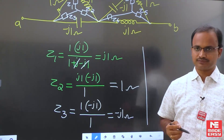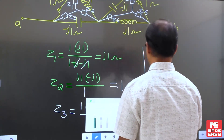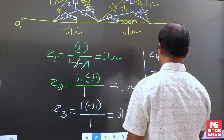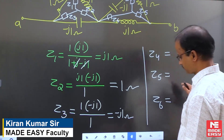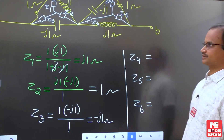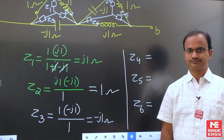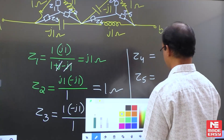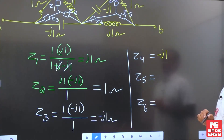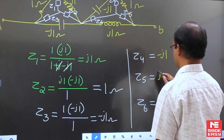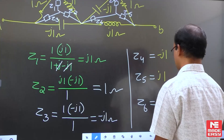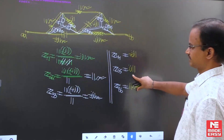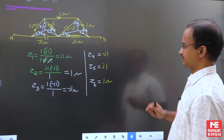Z1, Z2, and Z3 values are obtained. Apply the same procedure for Z4, Z5, and Z6: product of adjacent sides divided by total impedance. Z4 equals minus J1, Z5 equals J1, and Z6 equals 1. All impedances are obtained. Can you now develop the simplified circuit?